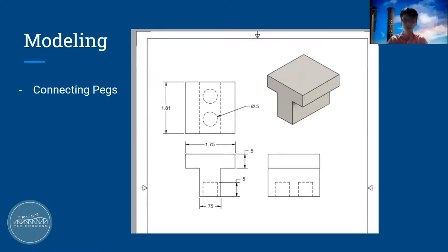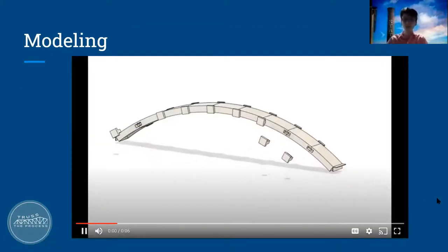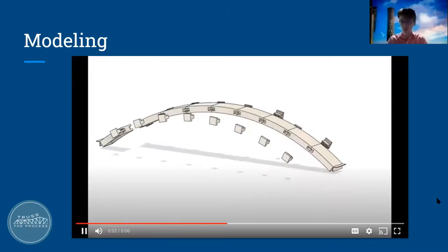The last part is the connecting peg with two holes total, one for each of the bridge segments it joins. For a better visualization of the construction, here's a short animation of the exploded assembly of the bridge.